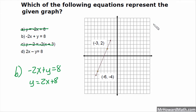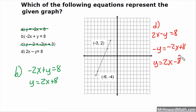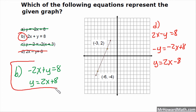Now line D: 2x minus y equals 8. Get y by itself — subtract 2x — so I get negative y equals negative 2x plus 8. Because my y is negative, I divide all terms by negative 1, which changes all the signs. So y becomes positive, 2x becomes positive, 8 is now negative. That has a positive slope, but it has a negative y-intercept. There's no way my y-intercept is down at negative 8. So line D is out, and that only leaves me with line B.